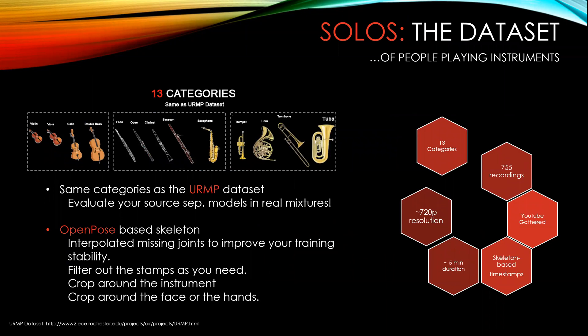SOLOS comprises 755 recordings across 13 categories of YouTube gathered videos. We have made SOLOS to match the same categories as the Rochester dataset, which is a small high quality dataset of audiovisual recordings. This way you can train your model on SOLOS and evaluate on the Rochester dataset in a real world scenario.